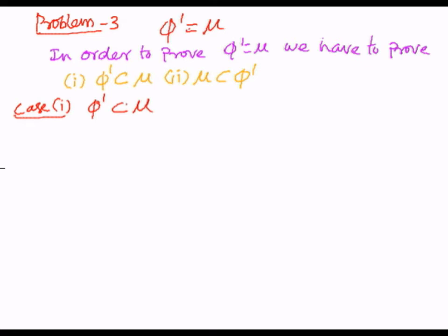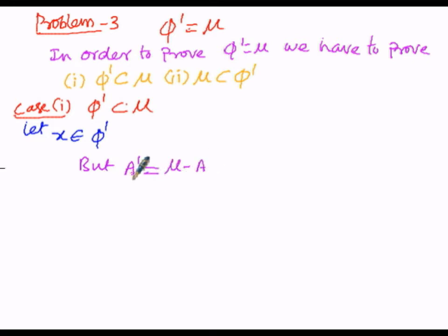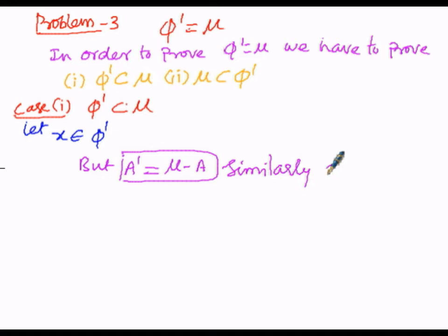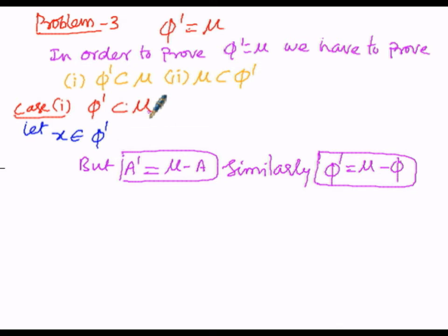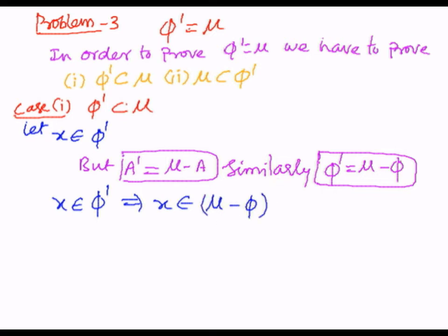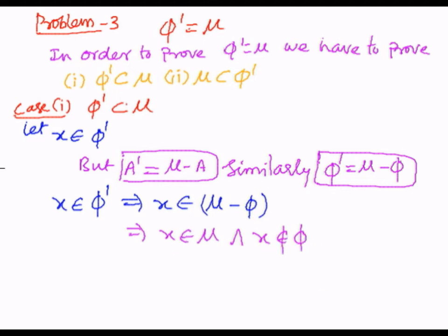In Case 1, we are going to prove the complement of the empty set, φ dash, as a subset of the universal set μ. Since we are proving by element-wise method, we consider one element x which belongs to φ dash. We know A complement equals μ minus A, so φ complement equals μ minus φ, since the empty set must be subtracted from the universal set. Based upon this principle, x belongs to φ dash can be written as x belongs to μ minus the empty set. That implies x belongs to μ and x does not belong to the empty set. Since x is not present in the empty set, that implies x belongs to only μ.